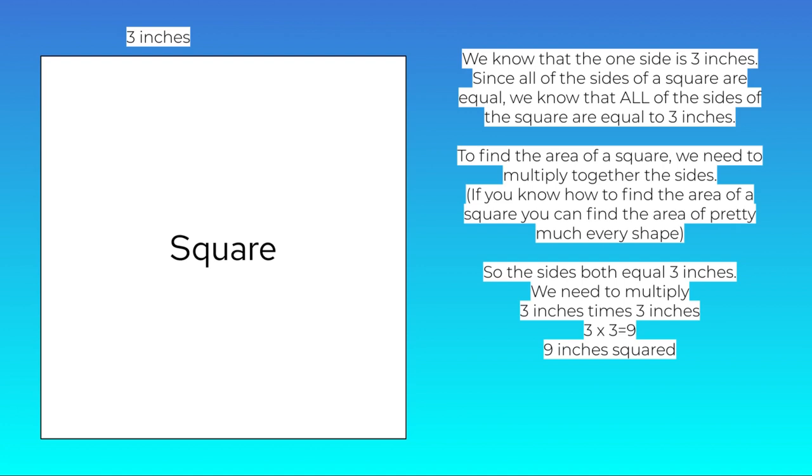To find the area of the square, we need to multiply together the sides. If you know how to find the area of a square, you can pretty much find the area of pretty much every other shape. So the sides both equal 3 inches, so we need to multiply. 3 inches times 3 inches equals 9 inches. And like I said before, we use square units. So we say 9 inches squared. That is our answer, 9 inches squared.